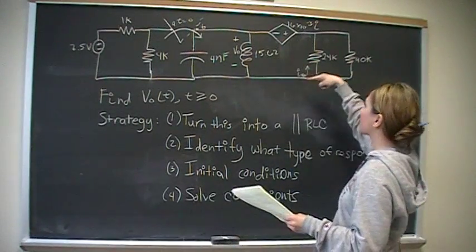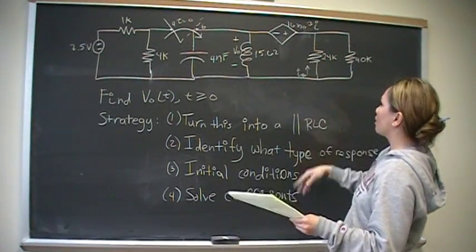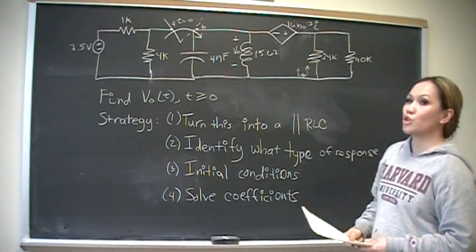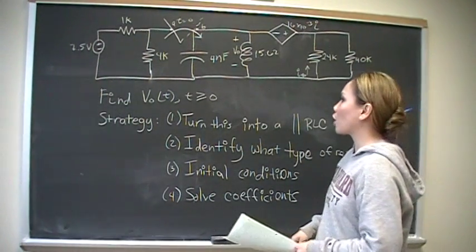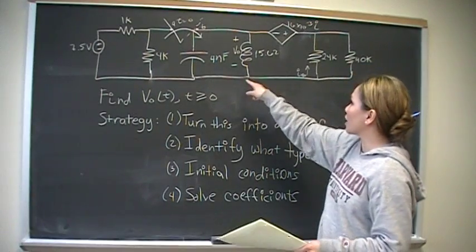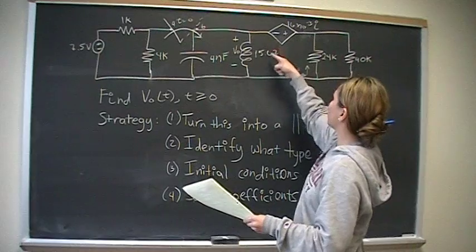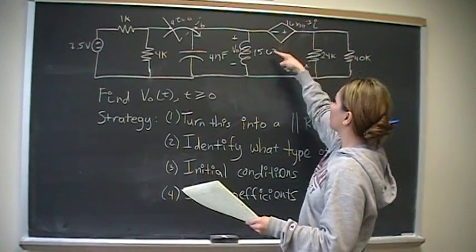So the immediate challenge is that we don't have anything that looks familiar. We have a capacitor in parallel with an inductor, and then we have something here that doesn't look like a parallel RLC. So the strategy for solving this problem is first,